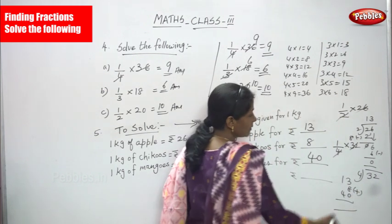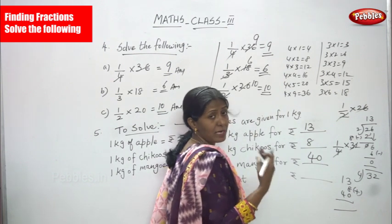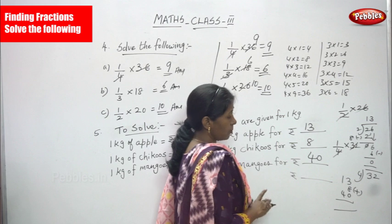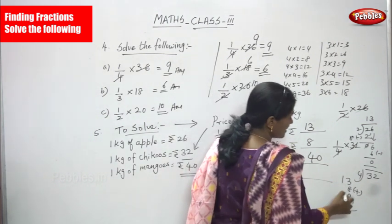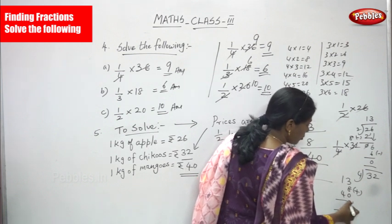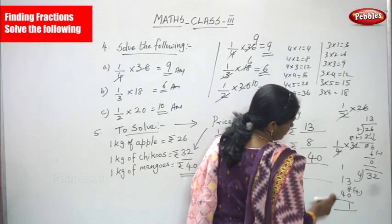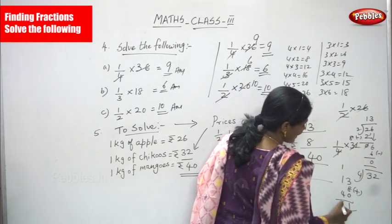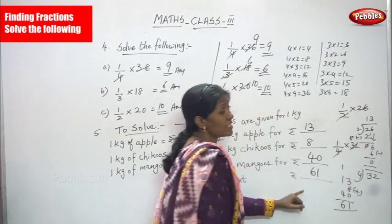Adding: 3 + 8 = 11, write 1 and carry over 1 to the tens place. Then 1 + 1 + 4 = 6 in the tens place. So the total is rupees 61. That is the total amount spent for all the fruits.